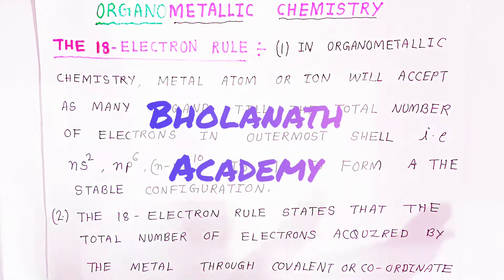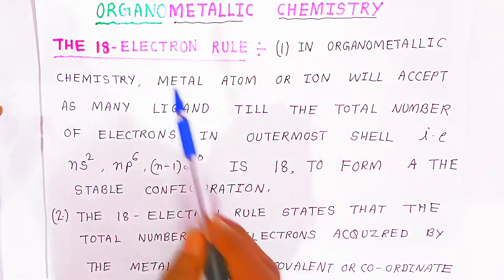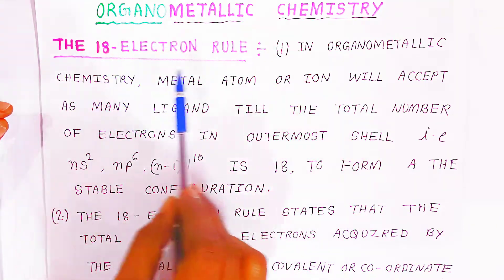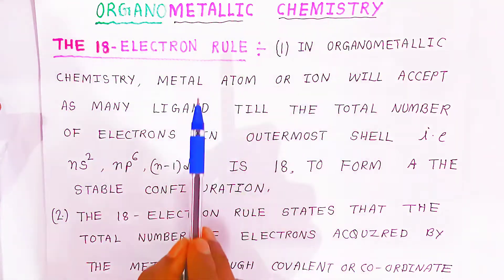Hello students, once again welcome to Bholanath Academy. In this video, we are going to see the 18 electron rule in organometallic chemistry.